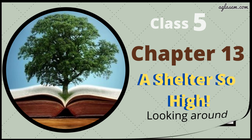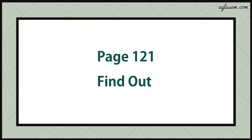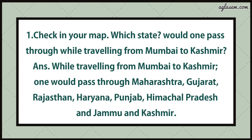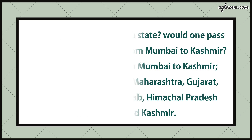Turn to page number 121. Question number one says: check in your map which state would one pass through while traveling from Mumbai to Kashmir. The answer is: while traveling from Mumbai to Kashmir one would pass through Maharashtra, Gujarat, Rajasthan, Haryana, Punjab, Himachal Pradesh, and Jammu and Kashmir.